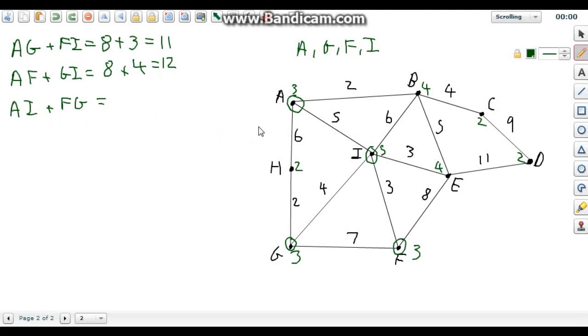Final pairing, A to I, they're directly connected by five. And F to G are directly connected by seven. So that would add up to give us 12. We want to select the one with the lowest total weight. So that's this 11. So we're picking A and G plus F and I.